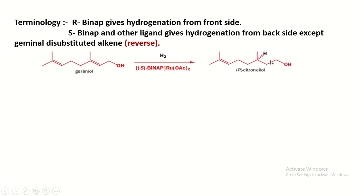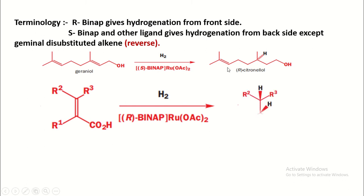By using above terminology, by using S-BINAP, the hydration takes place from the back side. The configuration of the product is easily assigned. In the next reaction, that is alpha-beta unsaturated acid reacts with hydrogen in presence of R-BINAP. In presence of R-BINAP, the hydration takes place from the front side. The configuration of the product is easily assigned with the help of this terminology.